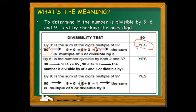For the divisibility rule by 6: is the number divisible by both 2 and 3? For 90 — 90 divided by 2 is 45, and 90 divided by 3 equals 30. So 90 is divisible by both 2 and 3. Remember, it should be both. If the number is divisible by 2 but not by 3, it is not divisible by 6, and vice versa. The number must be divisible by both 2 and 3 to be divisible by 6. So it's a yes.